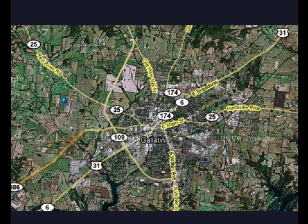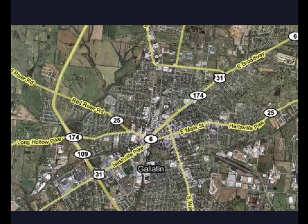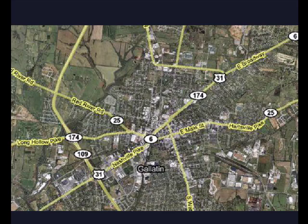If you press the I key on your keypad, it zooms in. And if you press the O key, it zooms back out. So you can see here we see streets, we still see street names, but we also see fields and forests and neighborhoods.